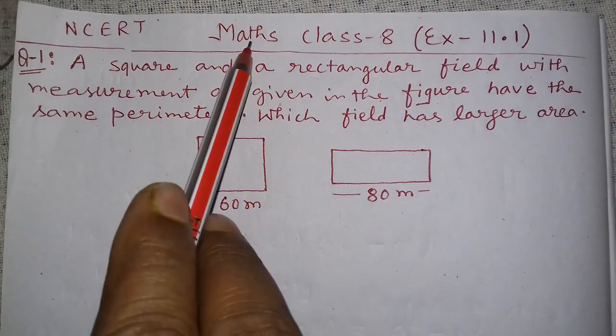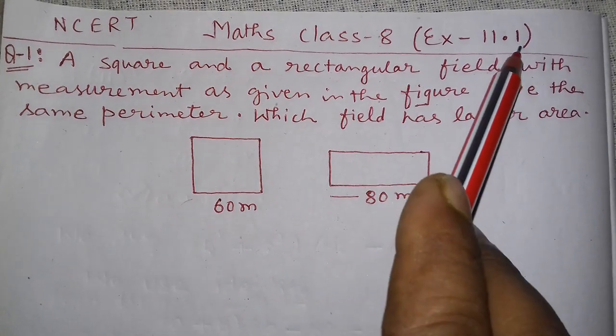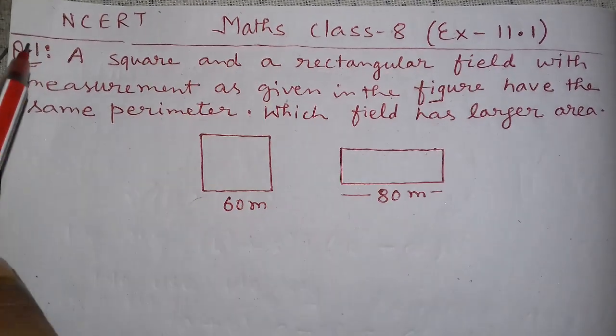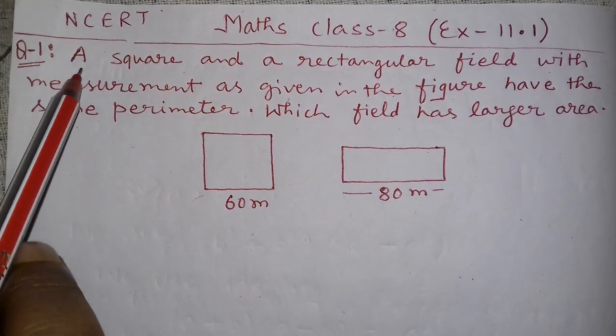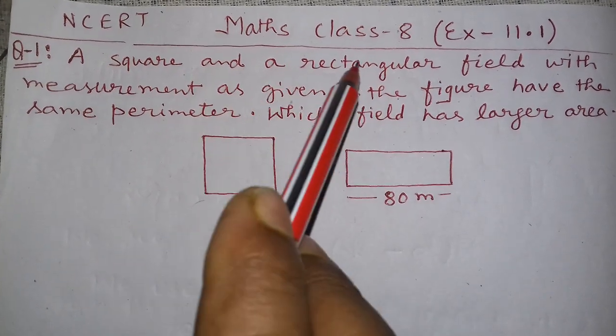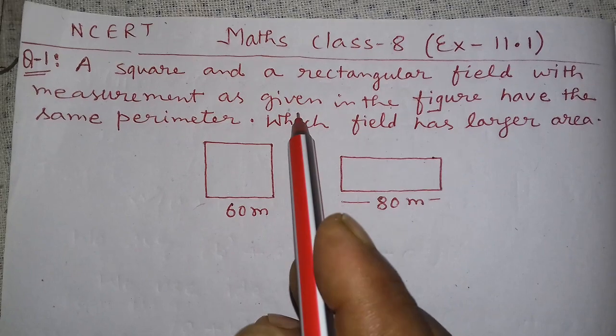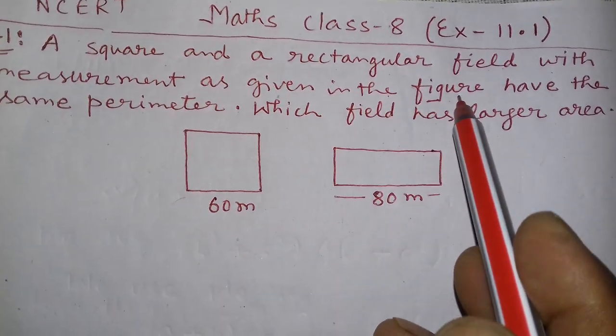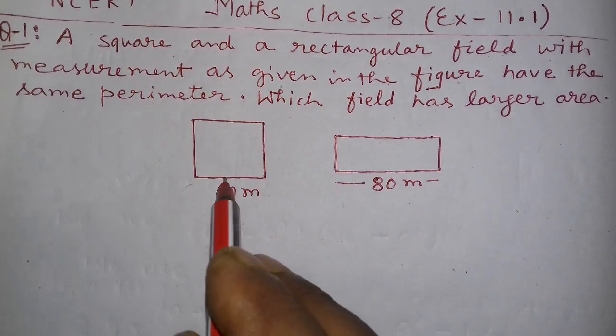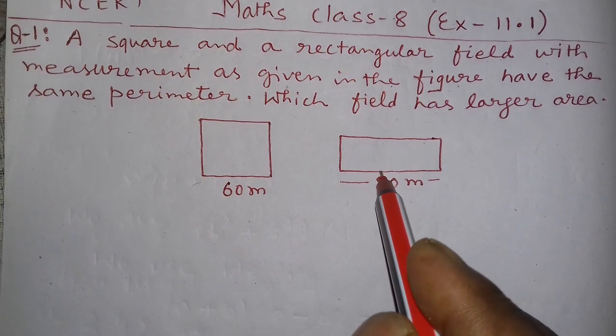NCERT math class 8, exercise 11.1, question number first. A square and a rectangular field with measurement as given in the figure. Here is one figure is squared and other figure is rectangle.